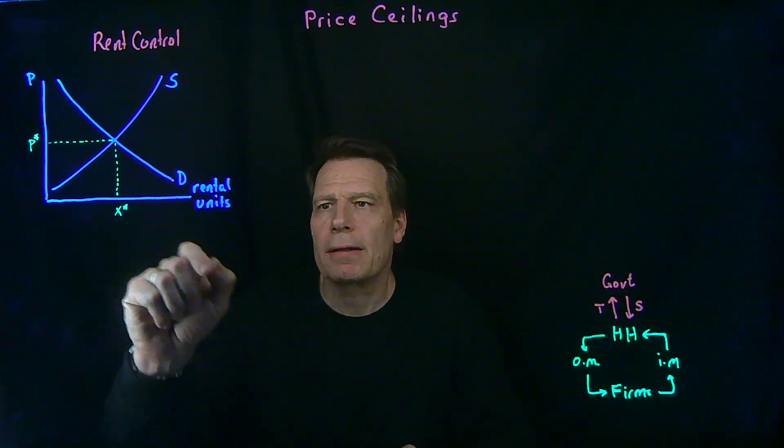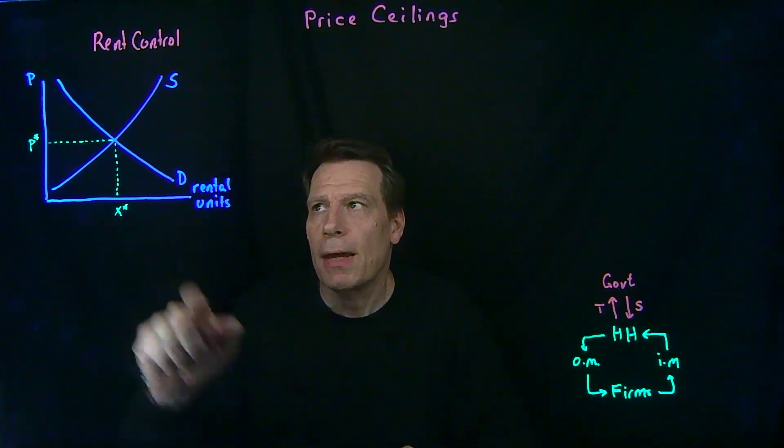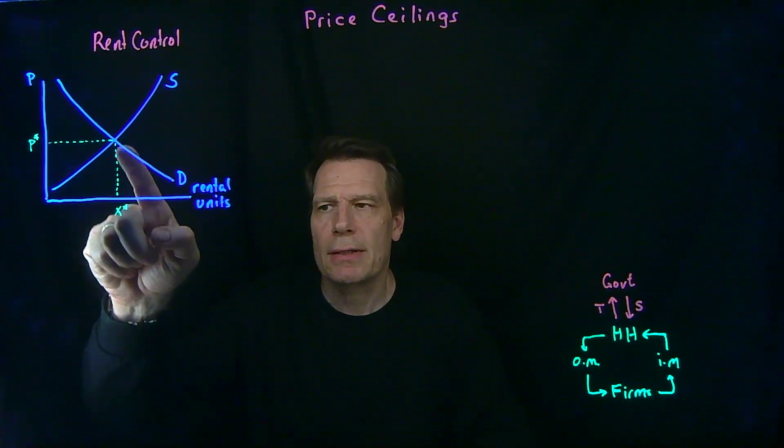So here we have a market where we have rental units of apartments on the horizontal axis, and the price of those rental units, which in this case would be the monthly rent, on the vertical axis. In an unregulated market, we'd of course end up at the equilibrium price and quantity.